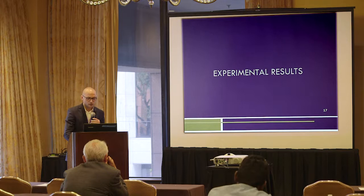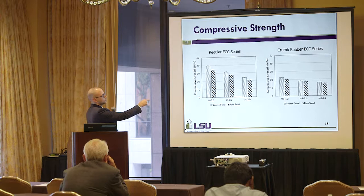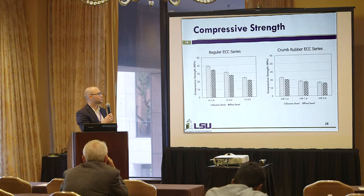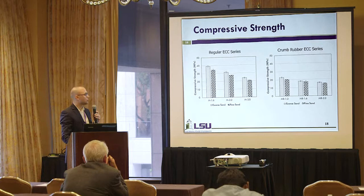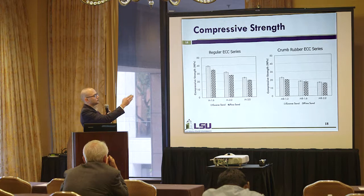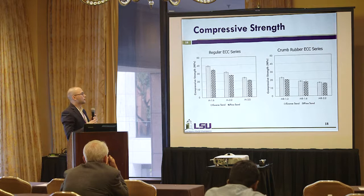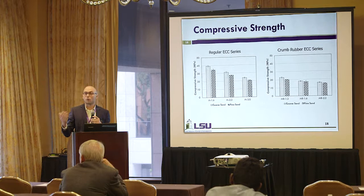In terms of compressive strength, as expected, increasing fly ash content — from mix M1.6 to M2.2 to M3.0, representing increasing fly ash-to-cement ratios — leads to a decrease in strength for both coarse and fine sand materials. The same trend appears in the crumb rubber series, though the crumb rubber mixes had compressive strengths that were too low. For regular ECC, M1.6 and M2.2 both achieved compressive strengths at 28 days equal to or greater than regular concrete, which was a good result.